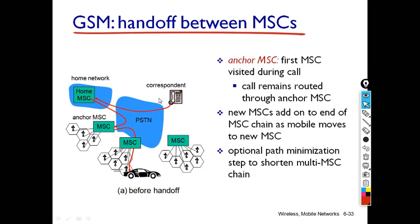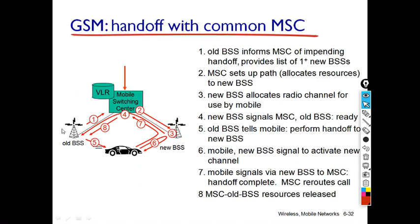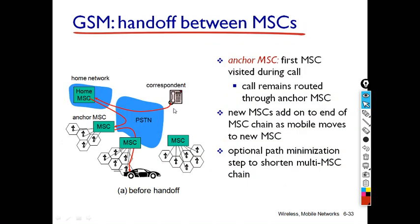In the earlier diagram, both BSSs were under the same MSC. But consider the case where the mobile user is moving from one MSC to another MSC — that is, the MSC keeps changing. In this case, how will handoff be handled when the mobile user hands off between different MSCs?